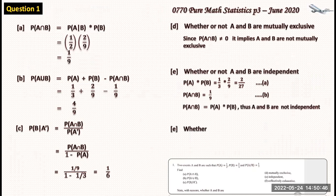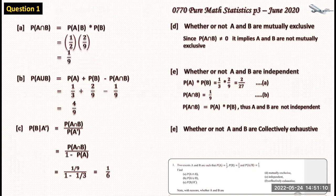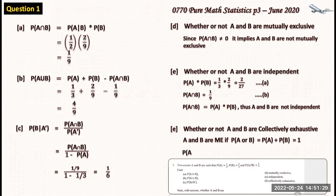Finally, part (f) asks whether A and B are collectively exhaustive. Two events are collectively exhaustive if P(A∪B) = 1. From part (b) we already know P(A∪B) = four over nine, which is not equal to one. Also, P(A) + P(B) does not equal one. Therefore A and B are not collectively exhaustive.